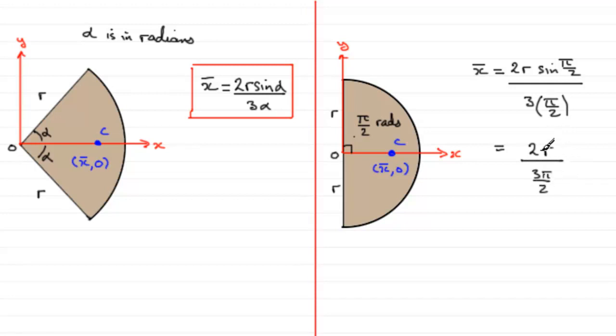And if we multiply top and bottom of this fraction by 2, we end up with 2r times 2, which is 4r. And then 3 pi upon 2 multiplied by 2 just gives us 3 pi.